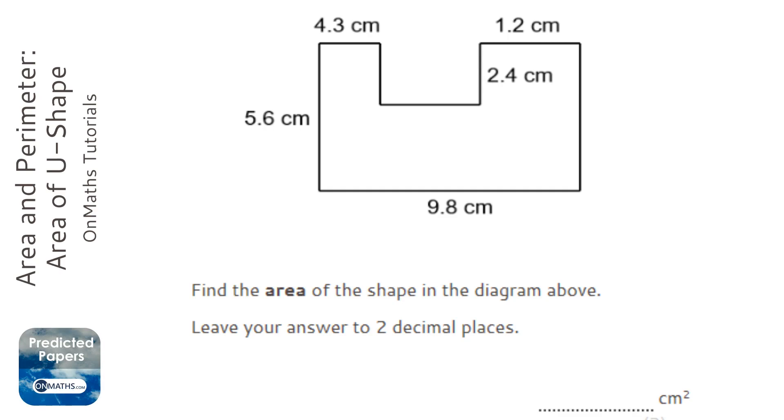The way I'm going to do it might not be the same way as you do it. I'm going to draw lines down here and here, and label these rectangles A, B, and C. That will help me show the examiner what I'm doing. I'm going to work out the areas of each individual rectangle.